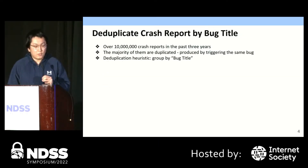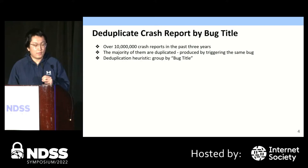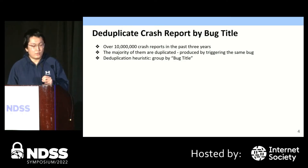Since Syzkaller is so successful, in the past three years it produced over 10 million crash reports. As Syzkaller is a continuous fuzzing tool, it inevitably will repeat triggering the same bug. Therefore, the majority of produced reports are duplicates, meaning they are produced by triggering the same bug. To deal with this, Syzkaller uses a heuristic for deduplication — it groups crash reports by bug title. In other words, as long as two crash reports share the same bug title, Syzkaller considers them as triggering the same bug.